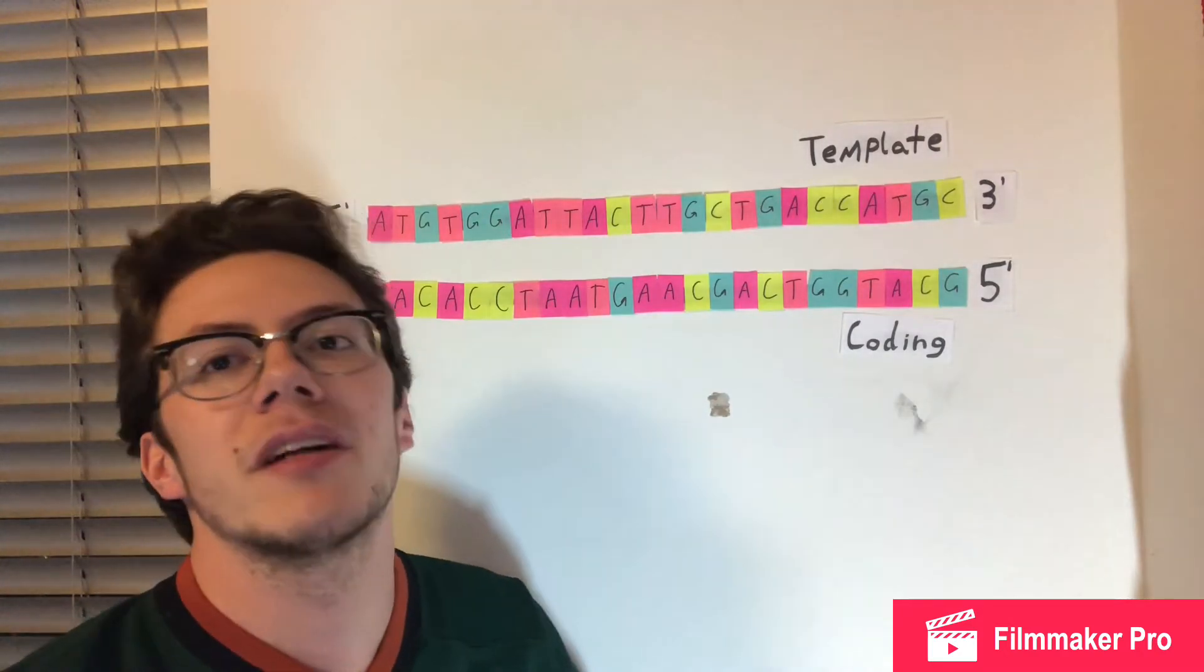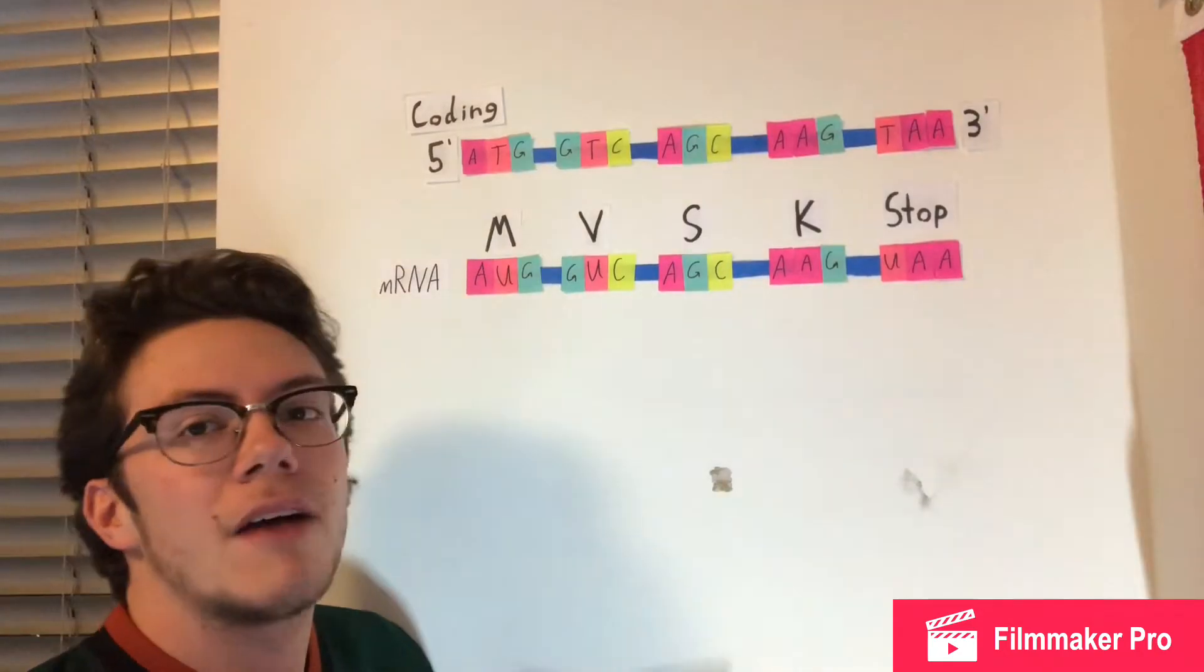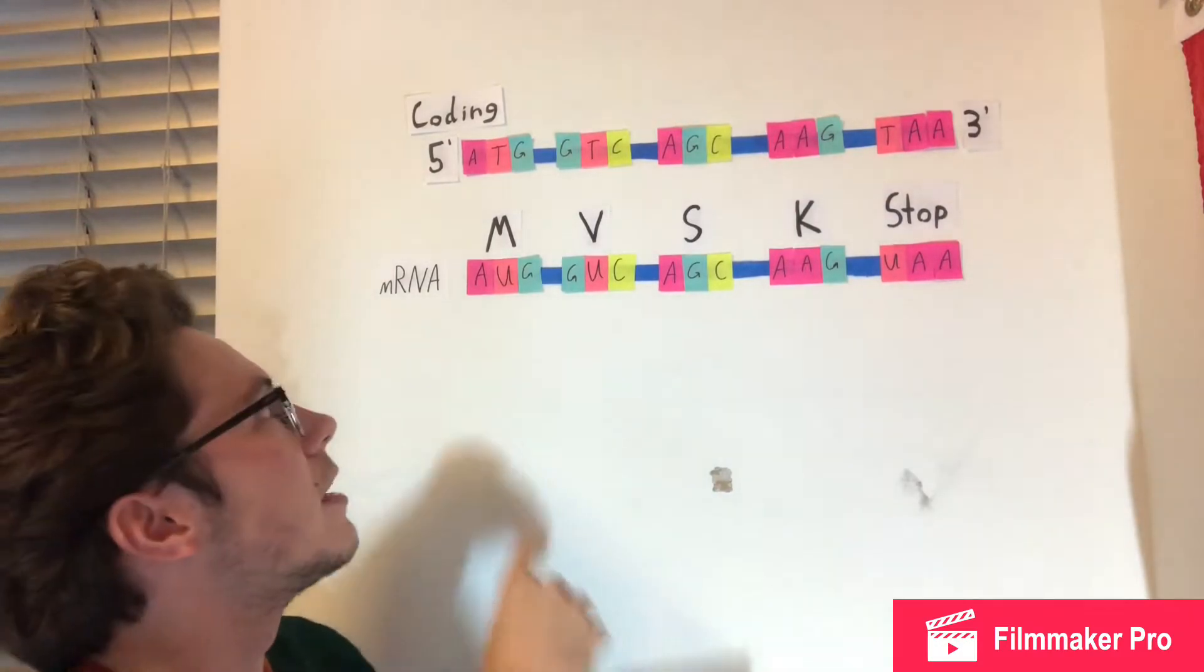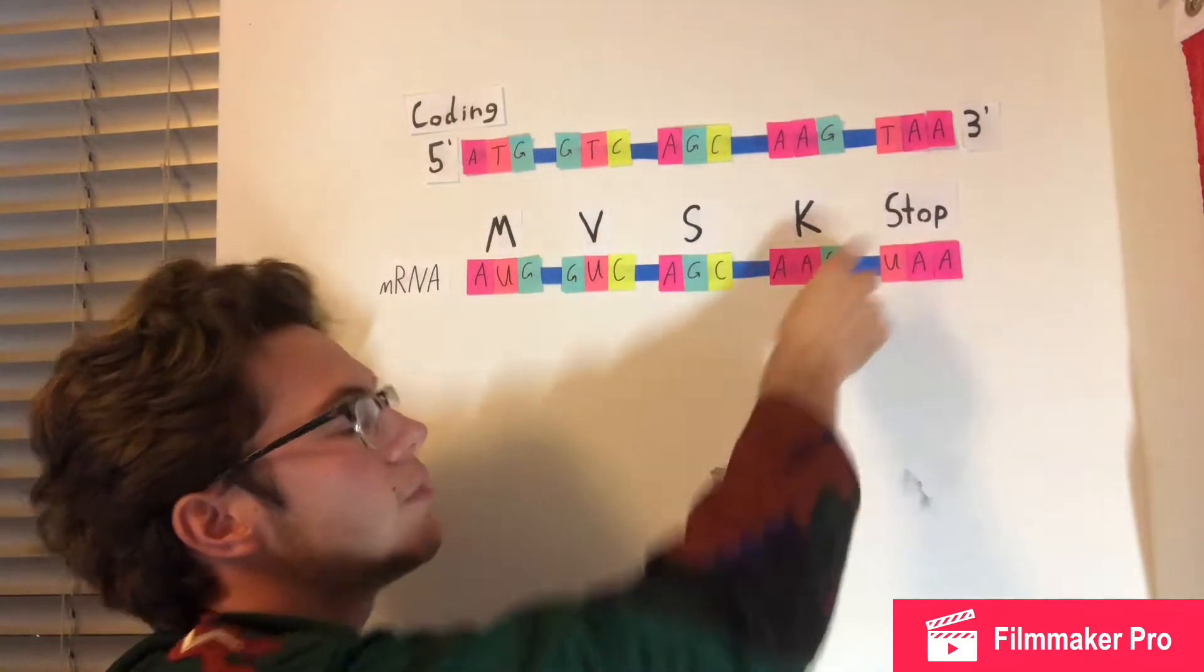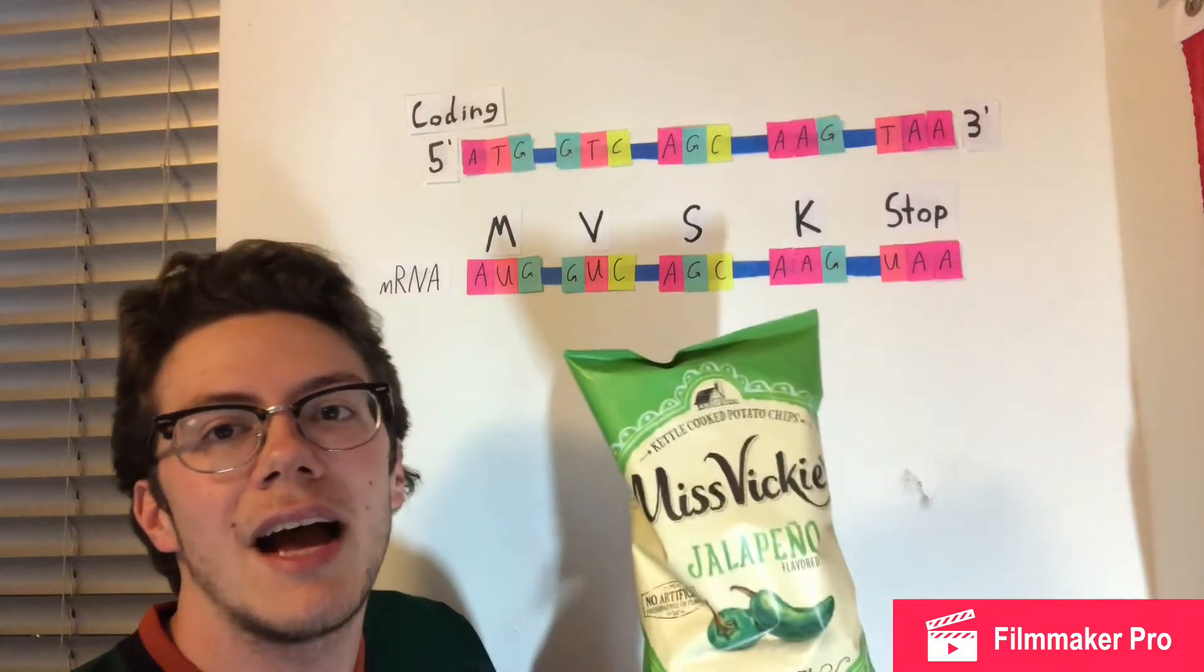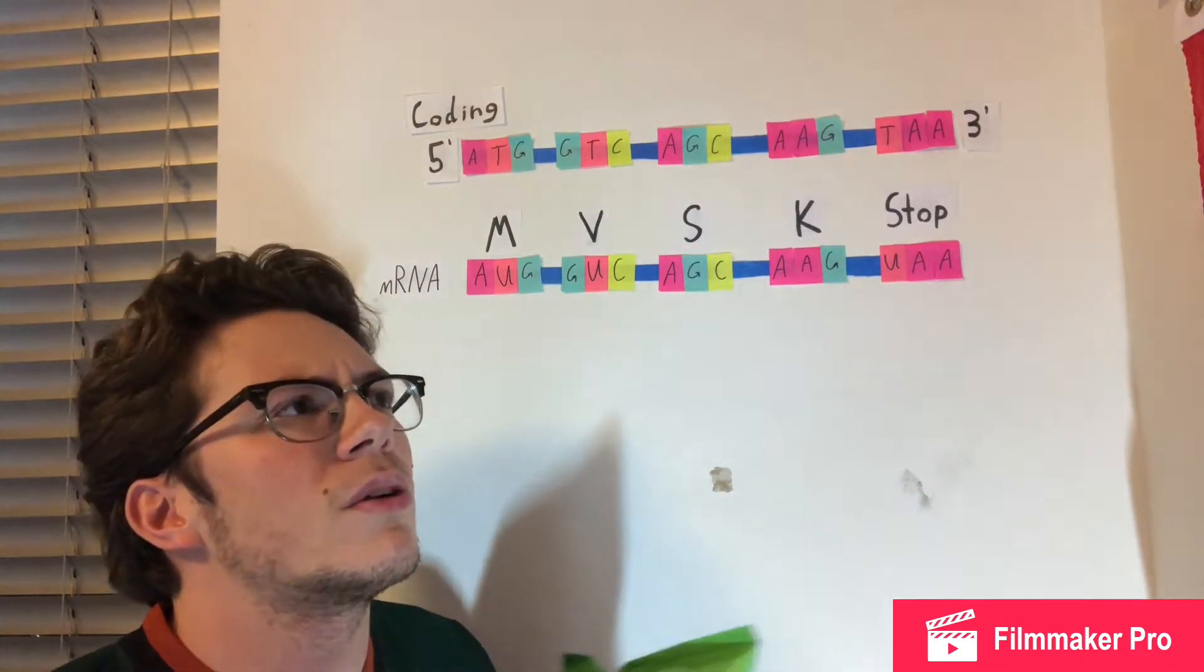After transcribing and translating our DNA sequence, we get our mRNA sequence which is MVSK stop, which codes for Miss Vicky's jalapeno kettle chips. So how do we get different types of chips?